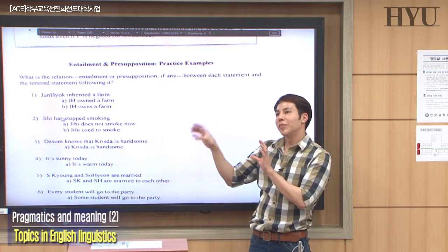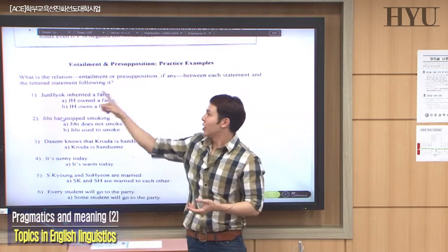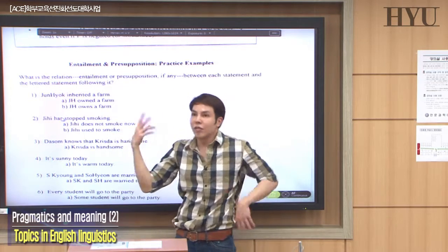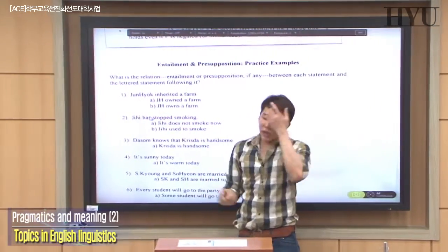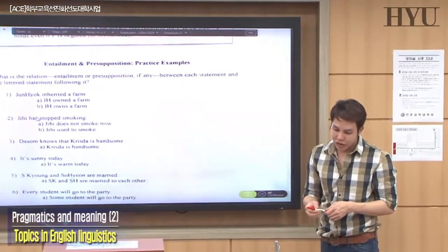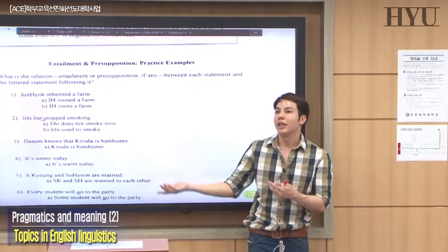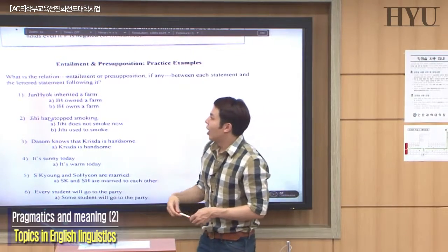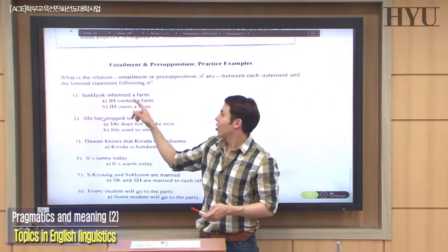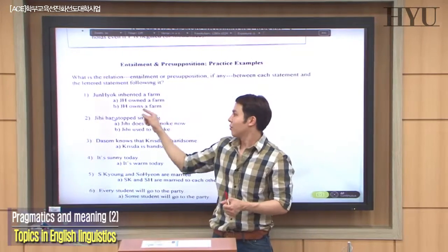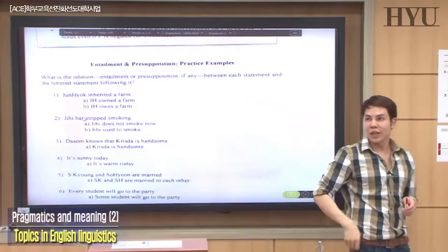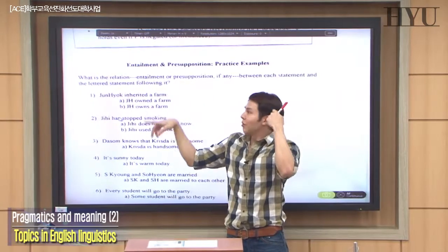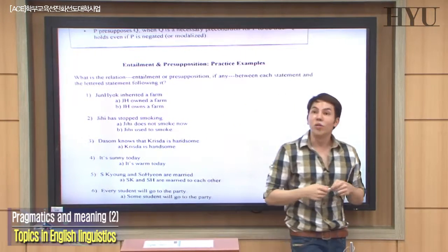We want to check whether some statements are entailments or presuppositions of the original statement. In number one, the original P-statement is 'Joon Hyuk inherited a farm.' A is 'Joon Hyuk owned a farm' and B is 'Joon Hyuk owns a farm.' Does the original entail A? When Joon Hyuk inherits a farm, it's legal property passed along to him. At least for a moment, he must have owned it, so it entails A.